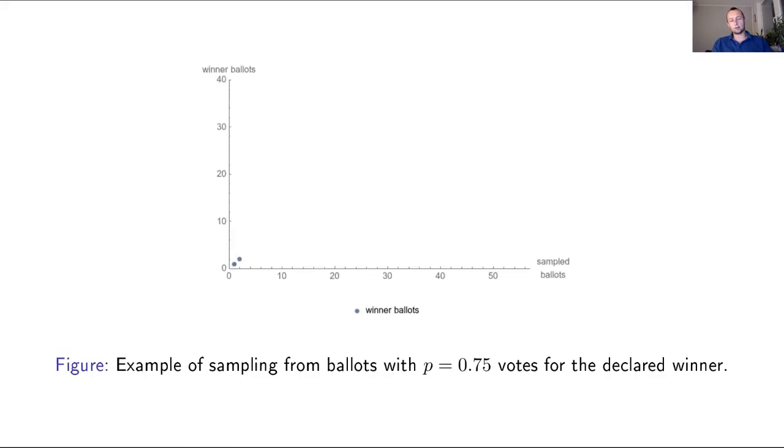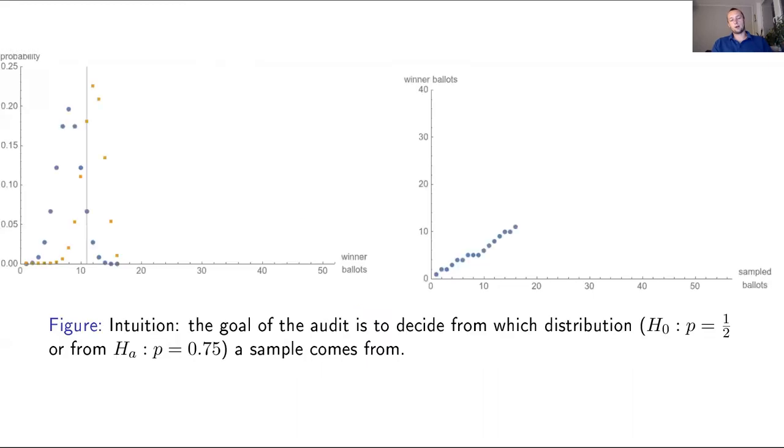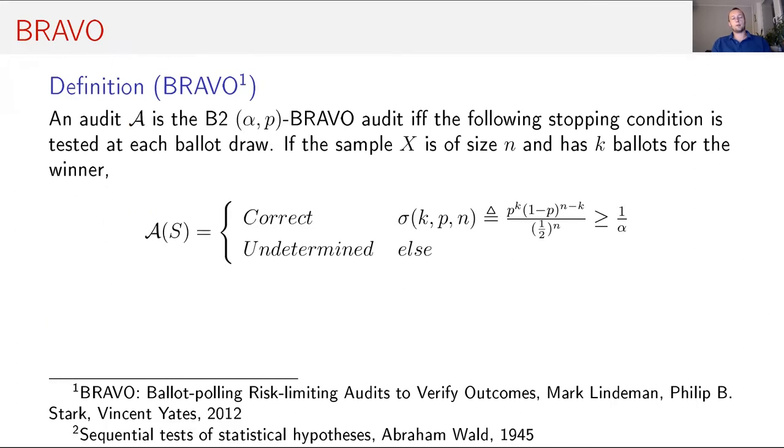So what risk limiting does? You sample some ballots, you can mark how many ballots are for the winner. And then at some point, you need to say if the sample comes from H_0 or from H_A distribution. So basically, you need to say in which world you are in.